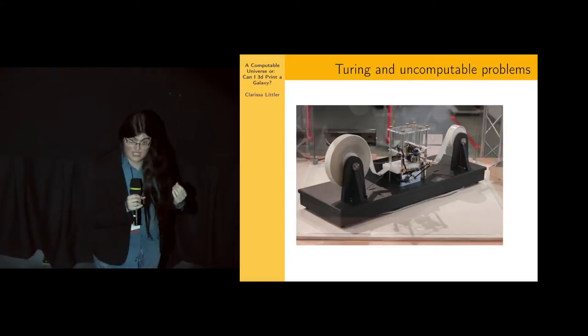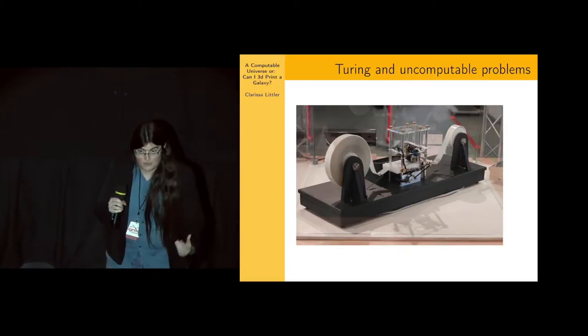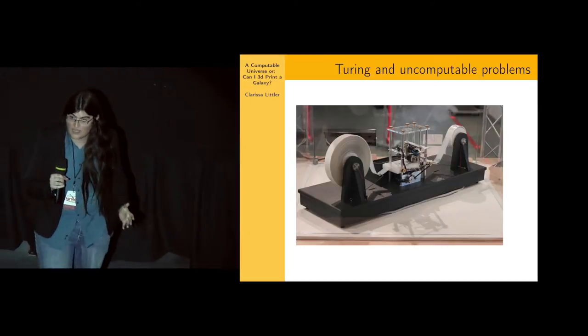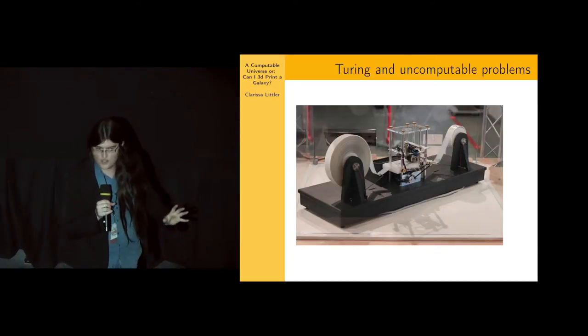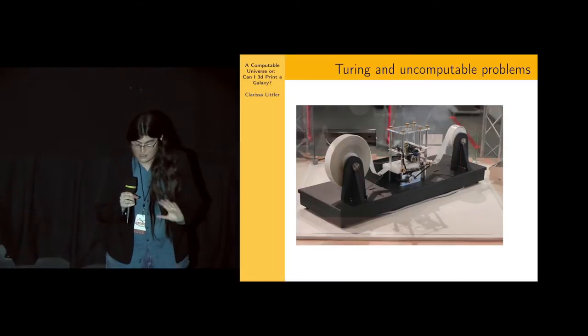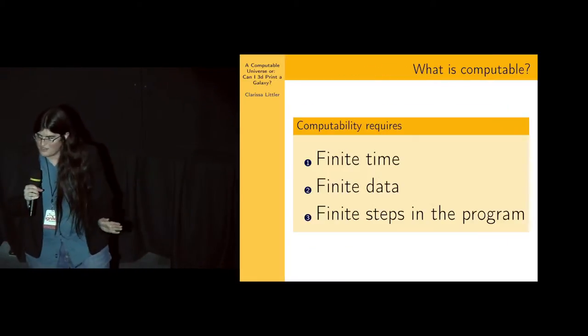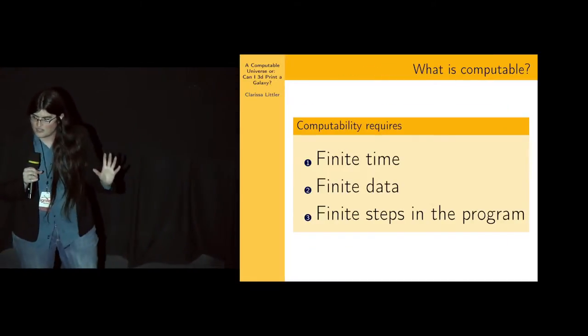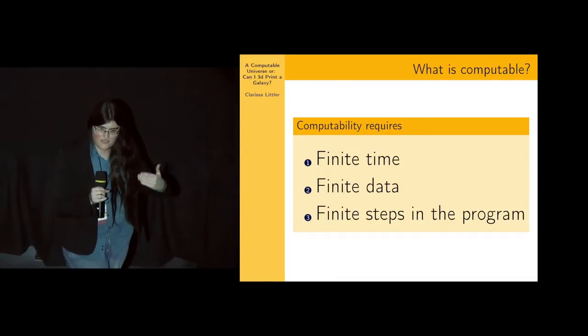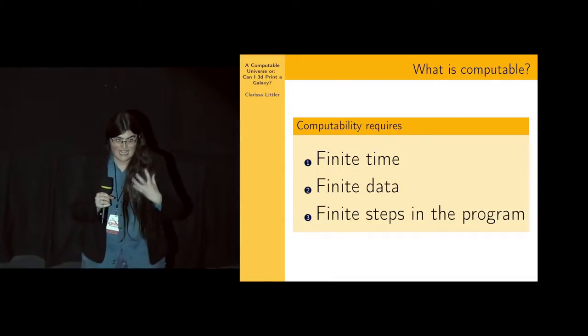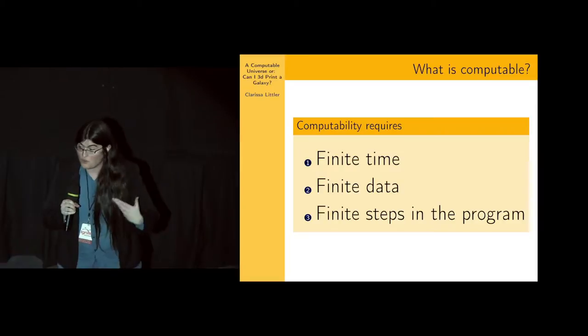But the thing is, there's a lot of things you can't do with programs, right? Alan Turing was one of the first people who figured out there are fundamental limits to what computers can do, no matter what the technology. And we're not going to focus on that, but we're going to focus on some sort of rules of thumb to tell whether or not something can actually be done by a computer at all.